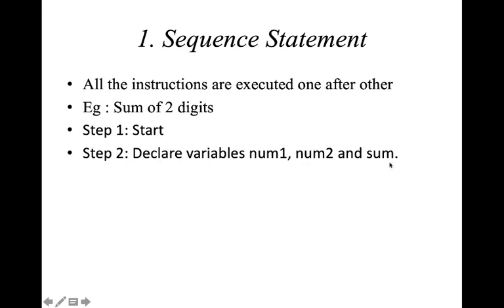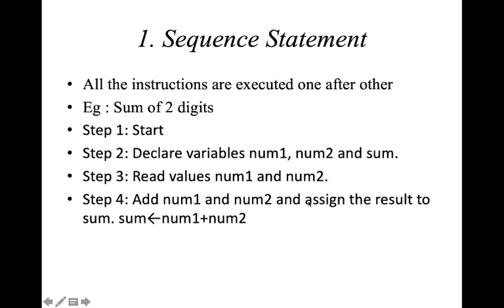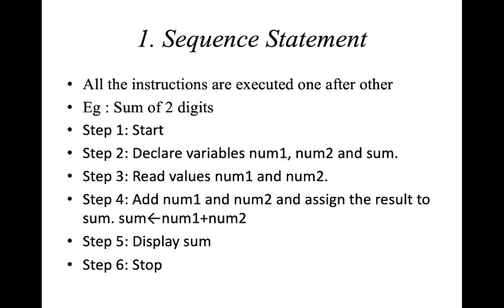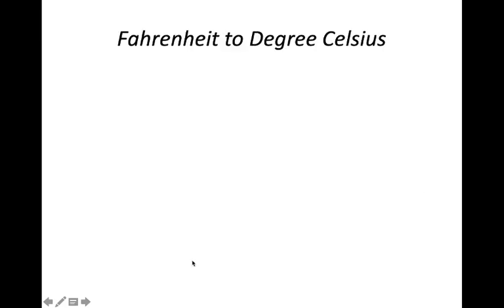In the sequence example for sum of digits: Start; declare num1, num2, and sum; read the values for num1 and num2; add num1 and num2 and assign the result to sum (using the arrow operator for assignment); display sum; Stop. This set of statements executes one after the other in the same order — that is why it is known as sequence statements.